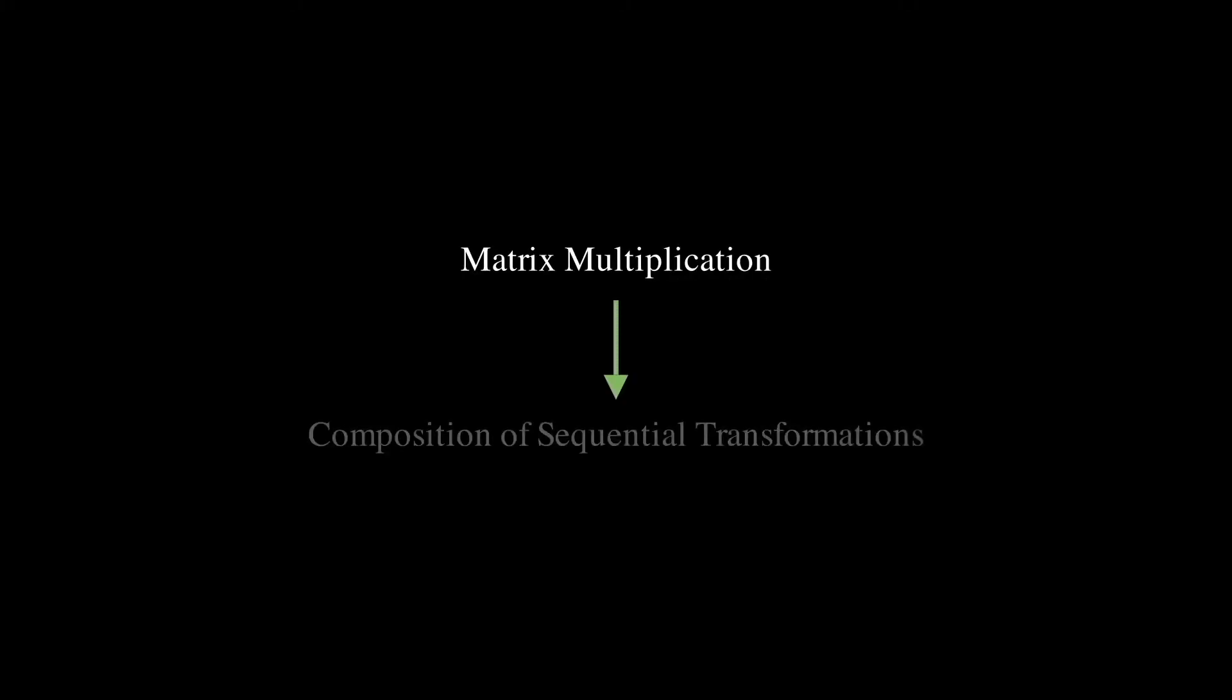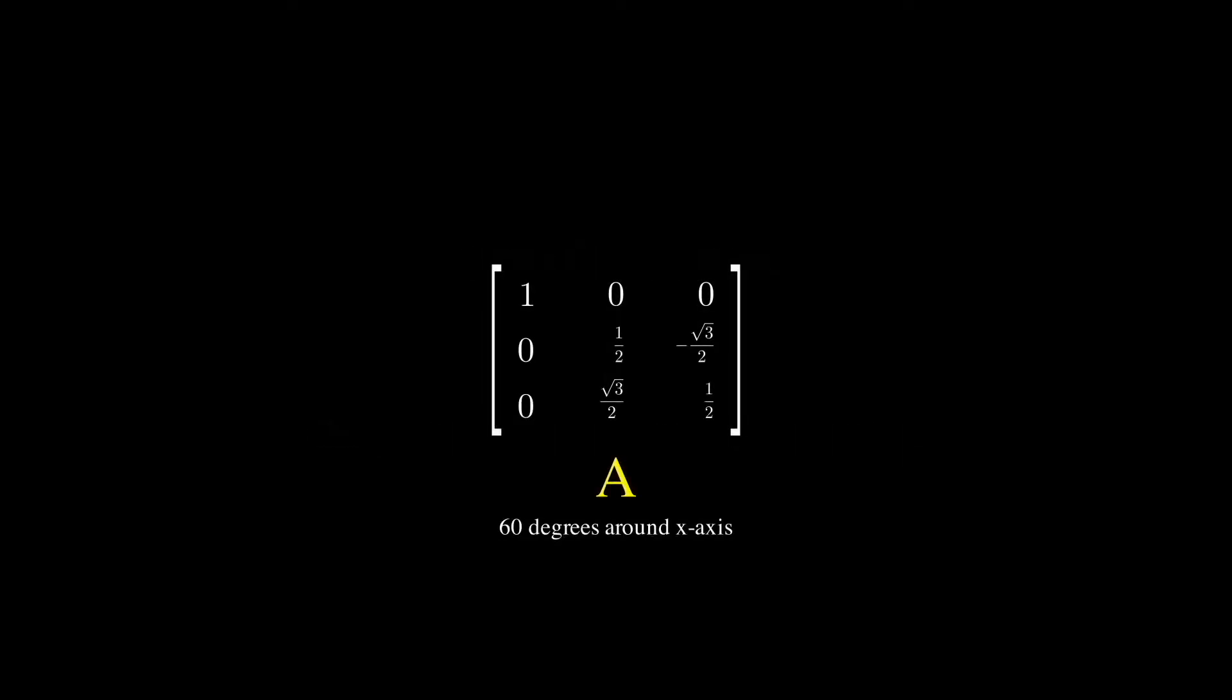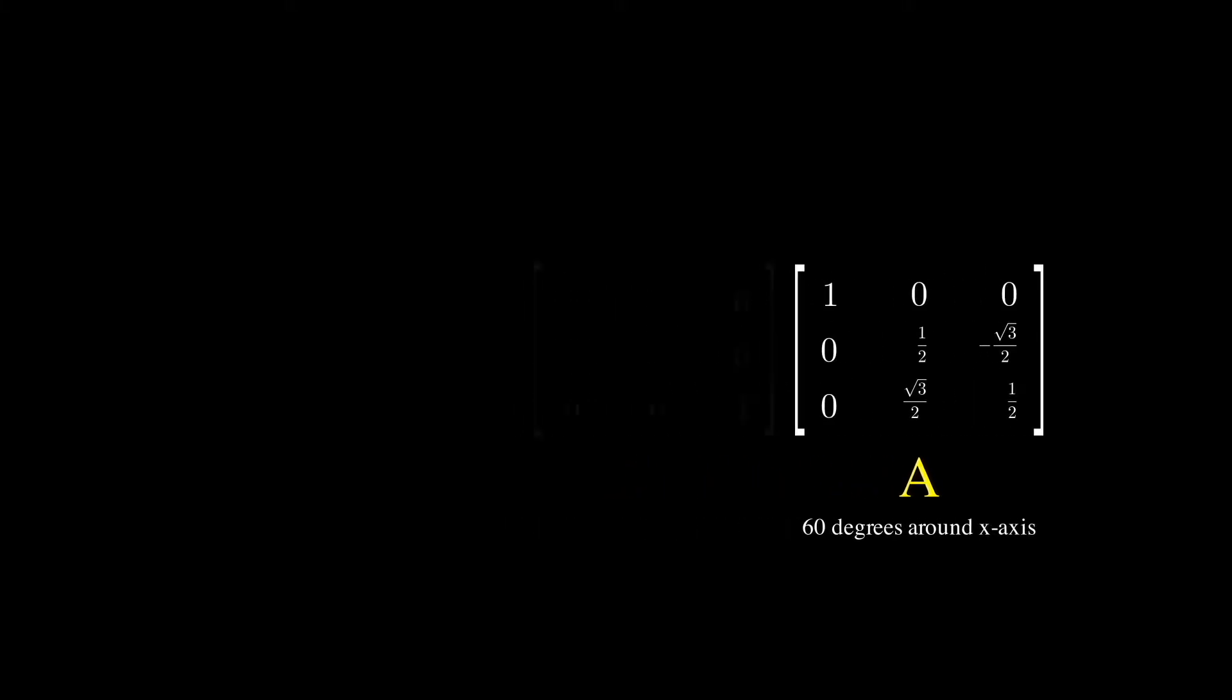Actually, now's a really good time for me to once again emphasize the idea that matrix to matrix multiplication is nothing but a composition of sequential transformations. Suppose I tell you orthogonal matrix A produce a rotation around the x-axis by 60 degrees, and matrix B produce rotation around the z-axis by 45 degrees.